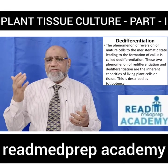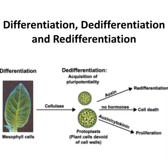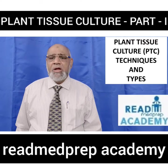These two phenomena — redifferentiation and dedifferentiation — are inherent capacities of living plant cells or tissues, described collectively as totipotency. In this image you can see differentiation, dedifferentiation, and redifferentiation: mesophyll cells are differentiated; when cellulase enzyme is applied, dedifferentiation occurs with acquisition of pluripotentiality, and a protoplast is prepared. When auxin is applied, redifferentiation occurs; when no hormones are applied, the protoplasts die; when auxin or cytokinin is applied, proliferation into callus tissue occurs.